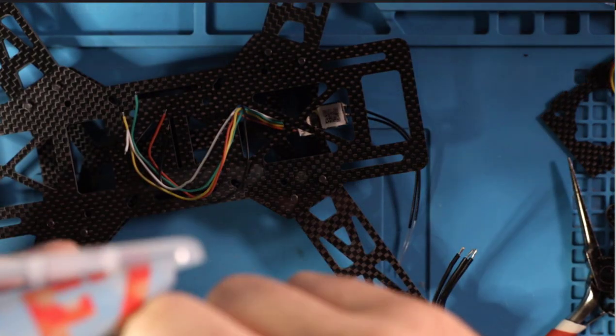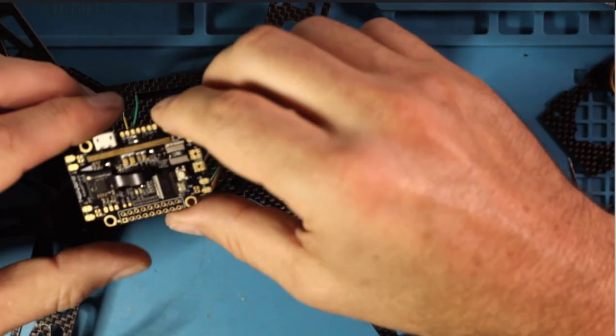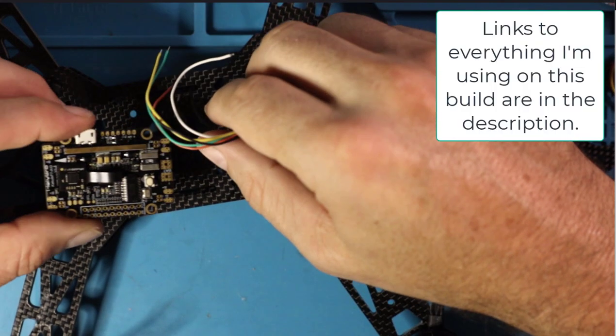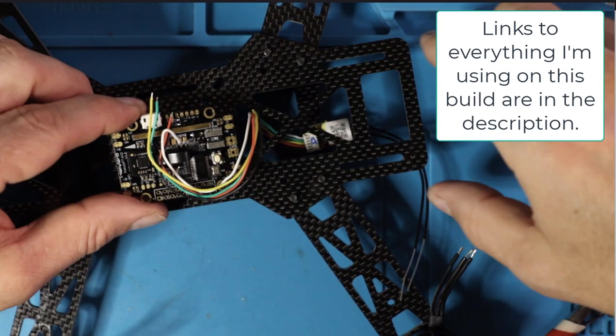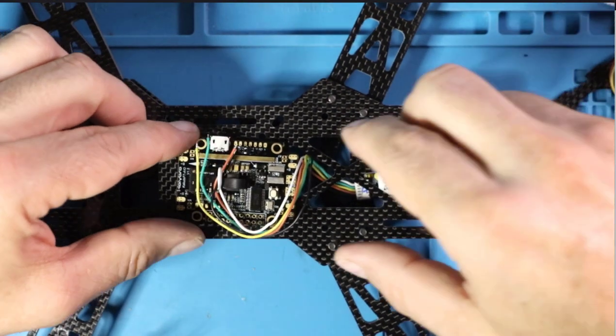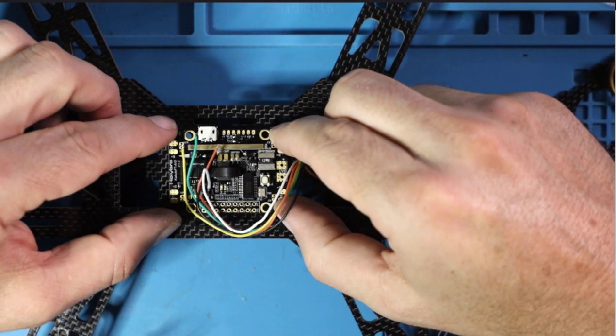All right, so moving along here, I am test fitting for the receiver, trying to figure out a place to put it, and also test fitting and getting the flight controller ready to get on the frame.